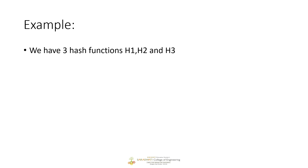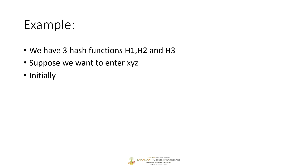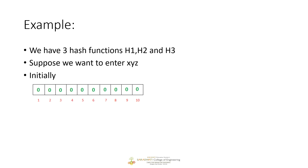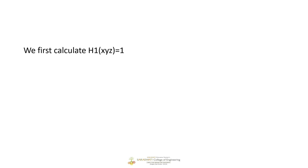Let's take a concrete example. Assume we have three hash functions: H1, H2, and H3. A hash function can, for example, calculate the number of alphabets in the given word and take a mod of it with 10 or 5. Suppose we want to enter xyz into the bloom filter. Initially all elements of the array are set to zero. I take xyz and apply it to hash function H1, and the output in this case is 1.